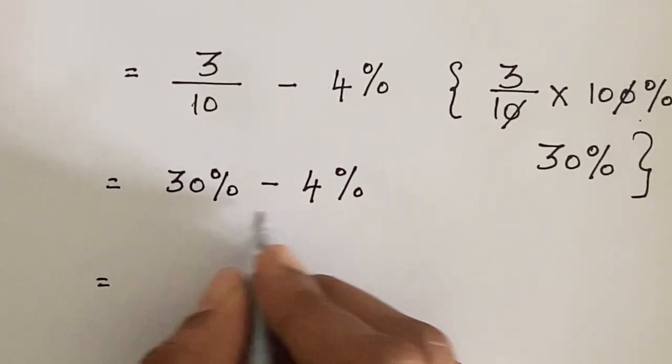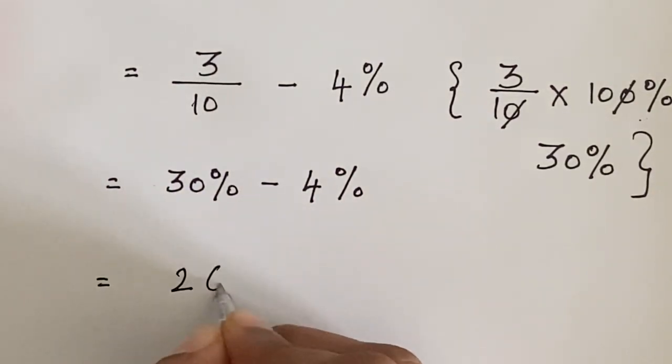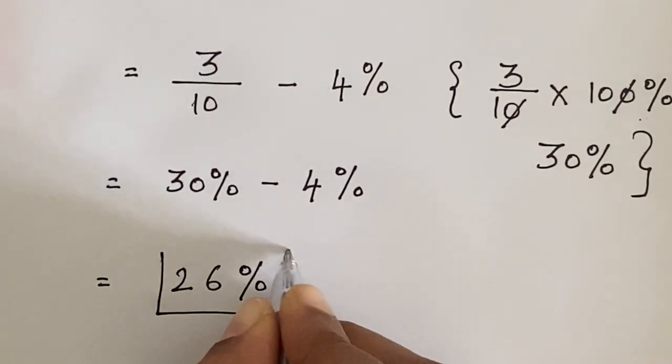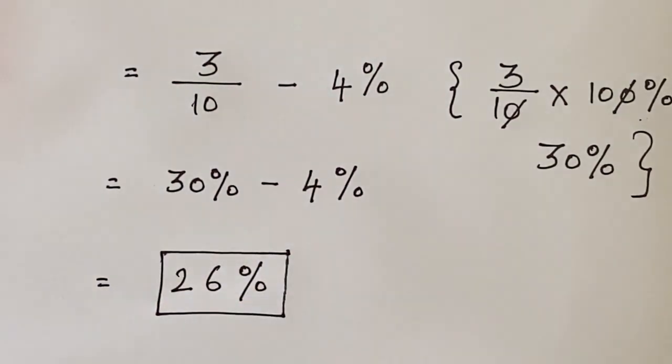Which equals 30 percentage minus 4 percentage is 26 percentage. For the above problem, the solution is 26 percentage.